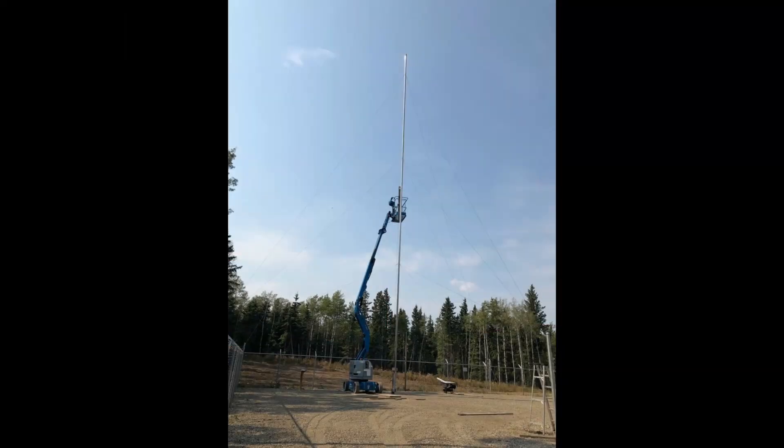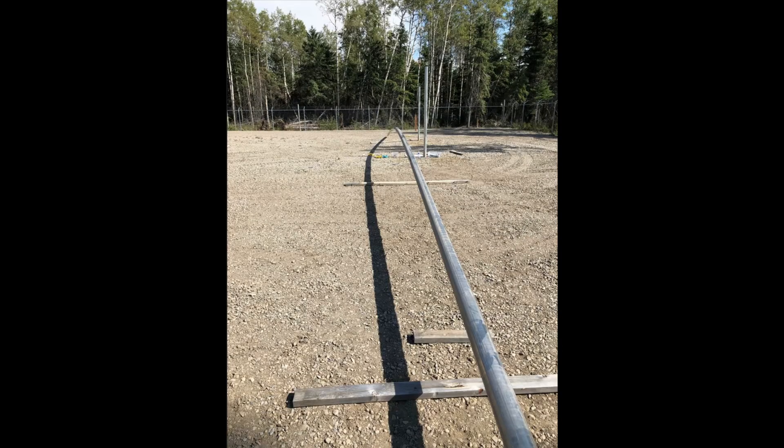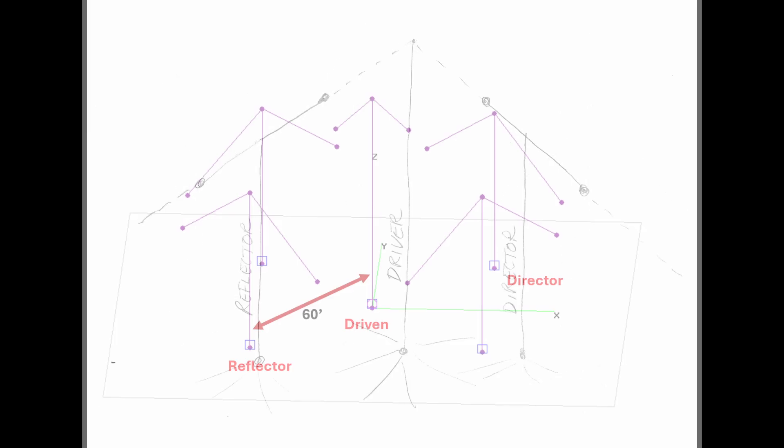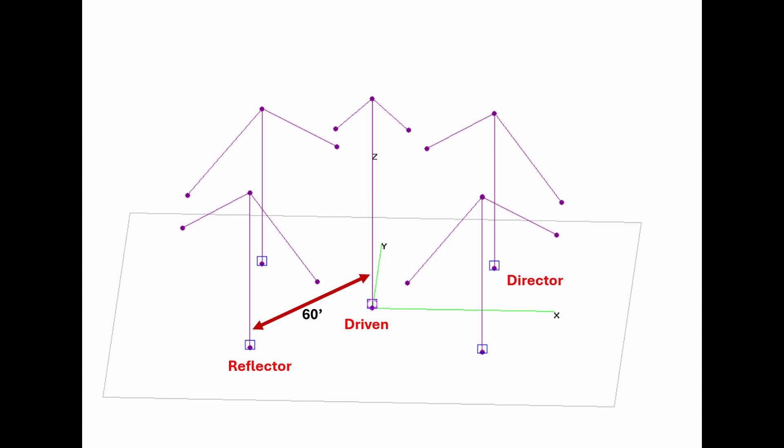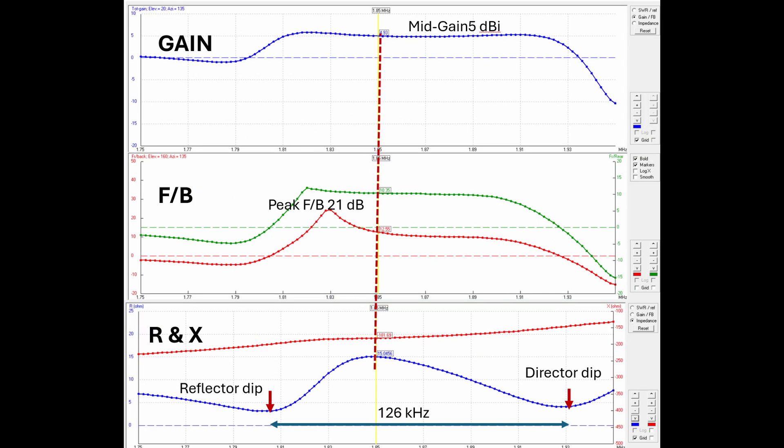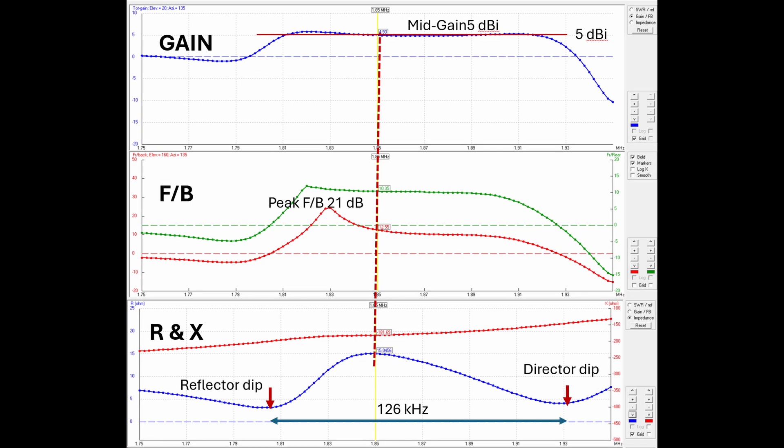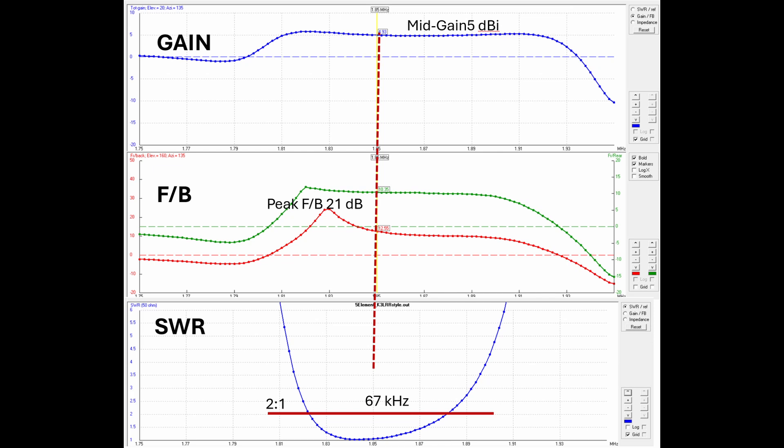Of course, design optimization can occur by physically changing the element spacing, element diameters, and top loading wire placement. But for this example here, for this 60-foot element space model, if the director reflector parasitics are tuned 126 kHz apart like this, we get this gain front-to-back performance. About 5 dB gain over 100 kHz. Now if we match the feed line here at the mid-gain point, we get this 67 kHz 2-to-1 operating window.